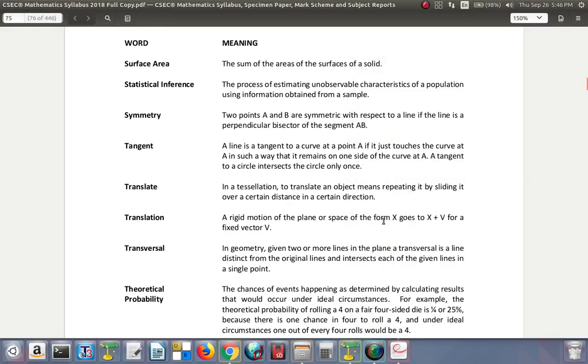Translate in a tessellation: to translate an object means replacing it by sliding it over a certain distance in a certain direction. We'll look at that when we're dealing with transformation, where translation is one of them. Translation is a rigid motion of a plane or space of the form x goes to x plus v for a fixed vector v.